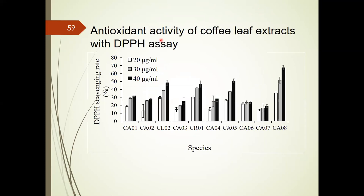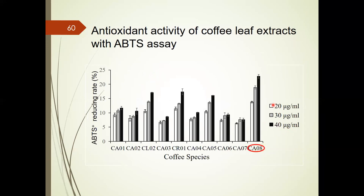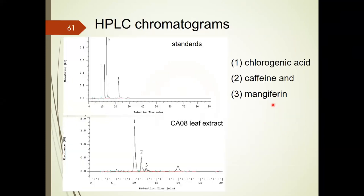First, we measured the anti-oxidant activity of coffee leaf extracts from eight types of coffee leaf species from Taiwan with the DPPH assay. The figure shows that CA0H had higher anti-oxidant activity than others at every concentration. A similar anti-oxidant pattern was present in ABTS radical scavenging activity.